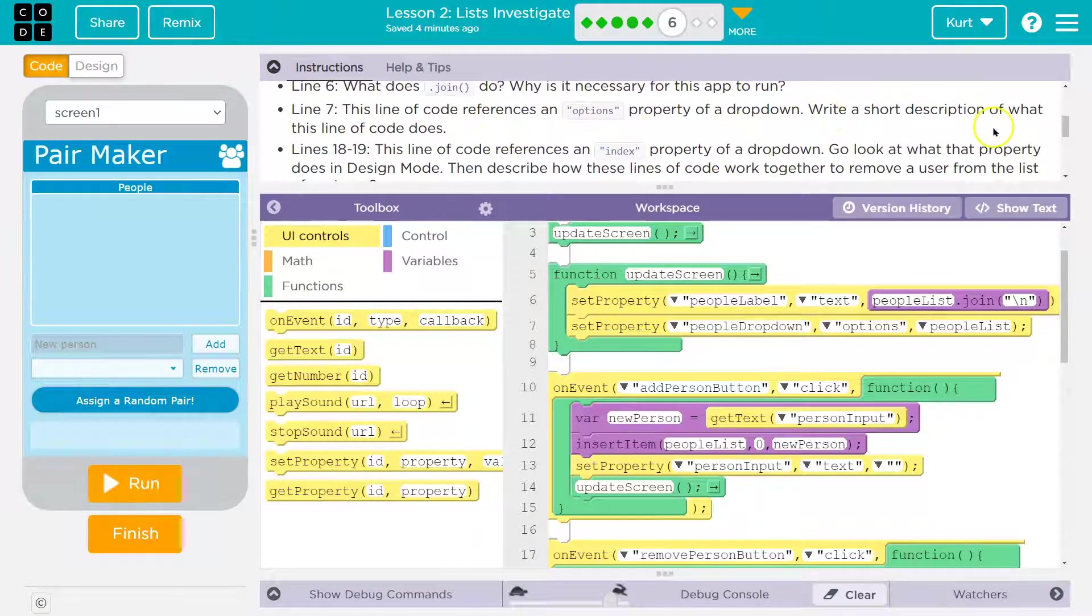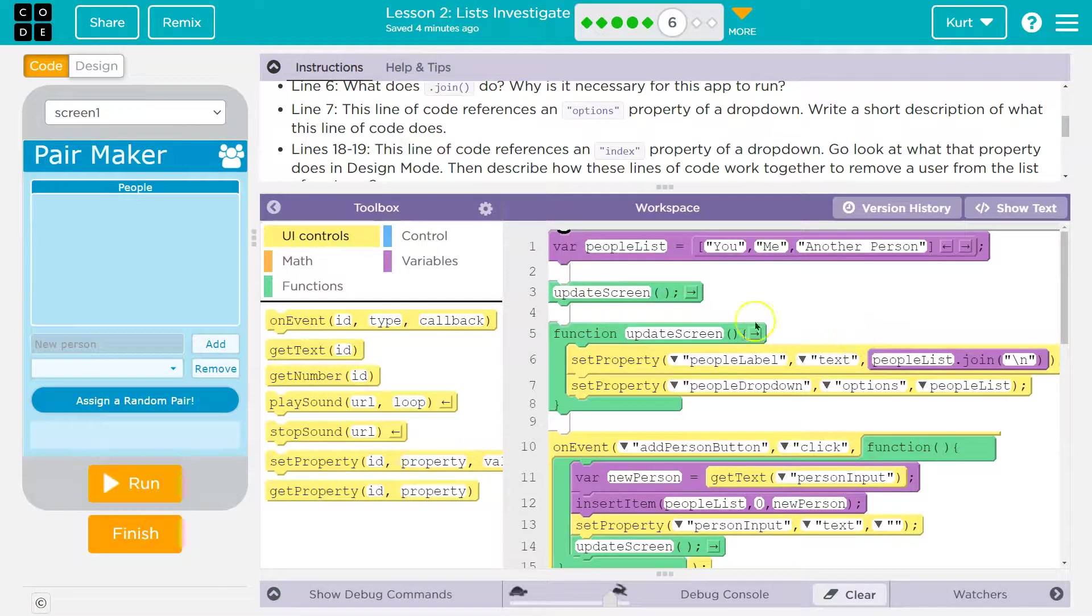Options property drop down, write a short description. Well, what that line of code does, like we were saying, is it is grabbing, yeah, line seven, it's grabbing options. It's setting up the people drop down menu options with the people list. So, and this is the list of people line 18 through 19.